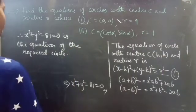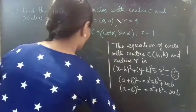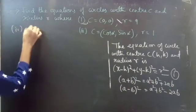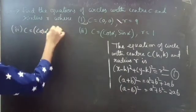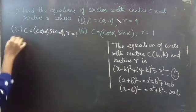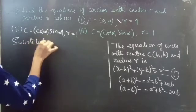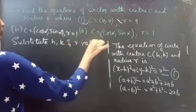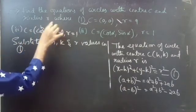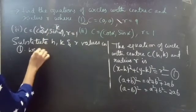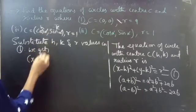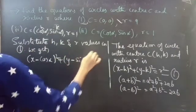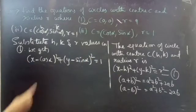Now for the second problem: we are given center C = (cos α, sin α) and radius R = 1. Substitute H, K, and R values in equation (1) — here H = cos α and K = sin α. We get (X − cos α)² + (Y − sin α)² = 1² = 1.